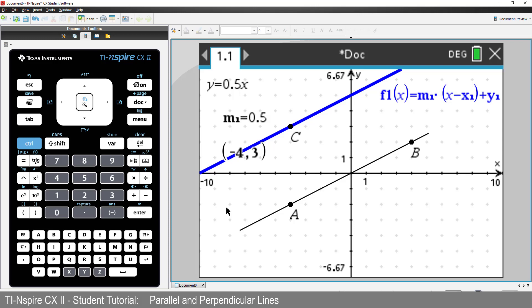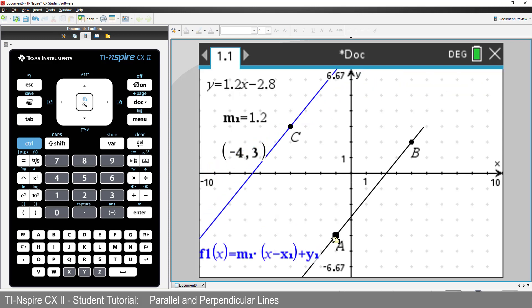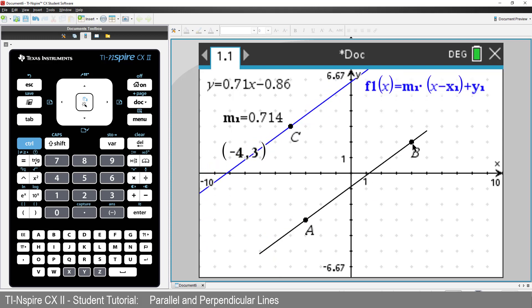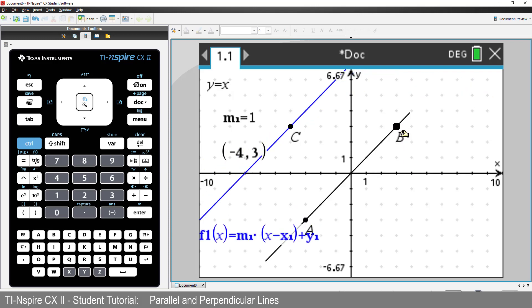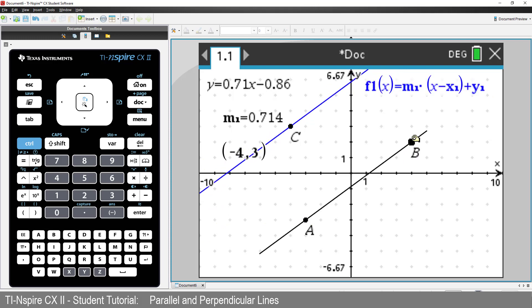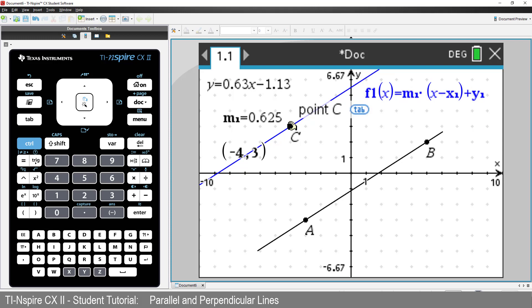Move the original line. Notice that our defined equation remains parallel. We can also move point C and see that our line continues to remain parallel, passing through point C. Now let's explore perpendicular lines.